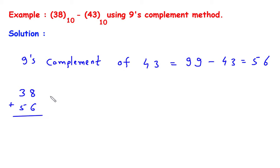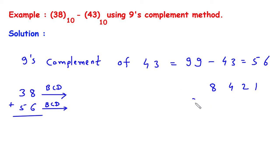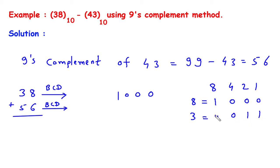Now we have to solve this using BCD, so we convert 38 and 56 into BCD. BCD is an 8421 code. 8 in BCD is written as 1000, and 3 equals 2 plus 1, so 3 in BCD is 0011. For 56: 6 equals 4 plus 2, so 6 in BCD is 0110, and 5 in BCD is 0101. So 38 is 0011 1000 and 56 is 0101 0110.